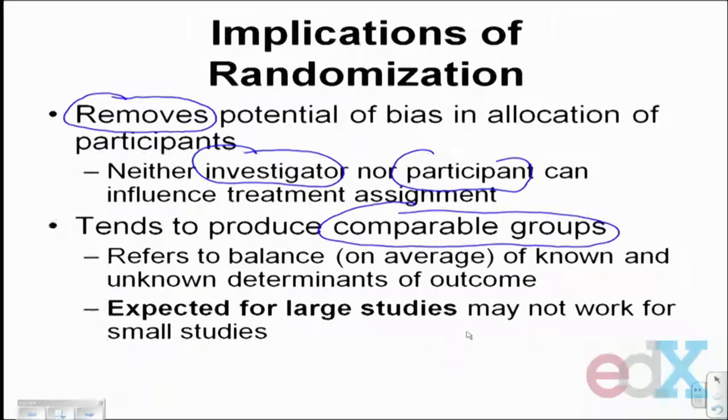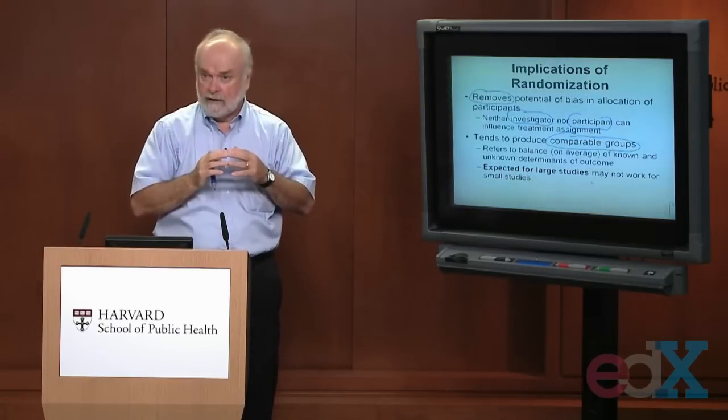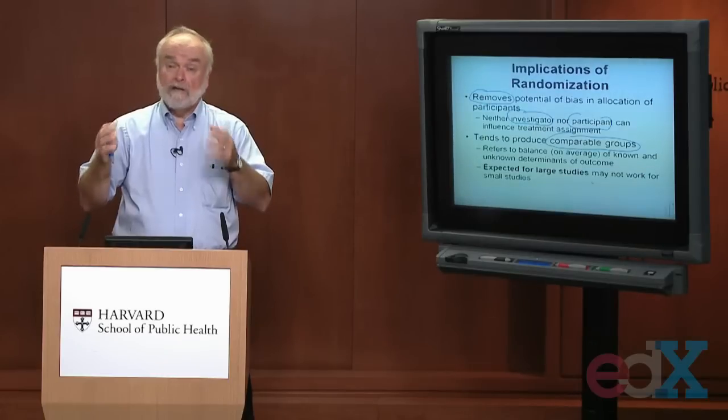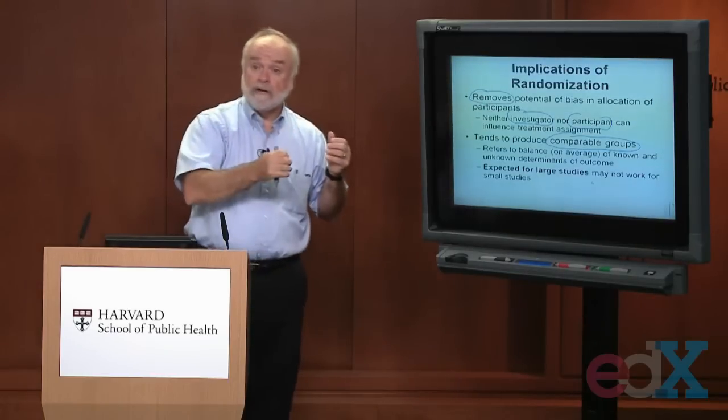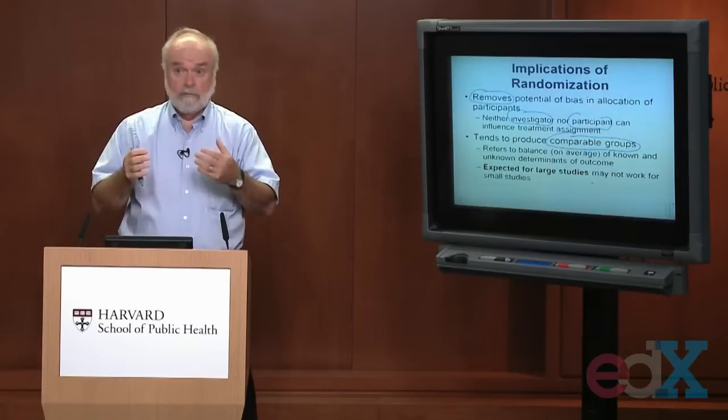For example, suppose I have 10 very elderly people in my study. Elderly people might be at higher risk of developing my outcome. If these elderly people all receive the new treatment and none of them receive the standard of care, when I compare my two groups, I'm really comparing new-treated people who are old versus standard-of-care people who are not old. I have a lack of comparability.